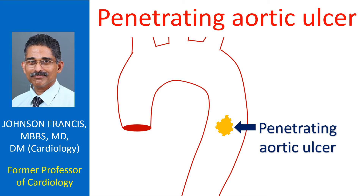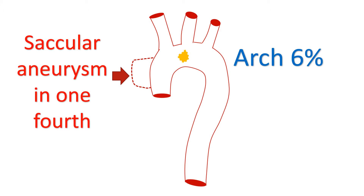Penetrating aortic ulcer is one of the three important acute aortic syndromes, the other two being acute aortic dissection and intramural hematoma. Majority of the penetrating aortic ulcers occur in the descending thoracic aorta, which contributes to about 60%, while nearly one third occur in the abdominal aorta. Only around 6% are seen in the aortic arch.